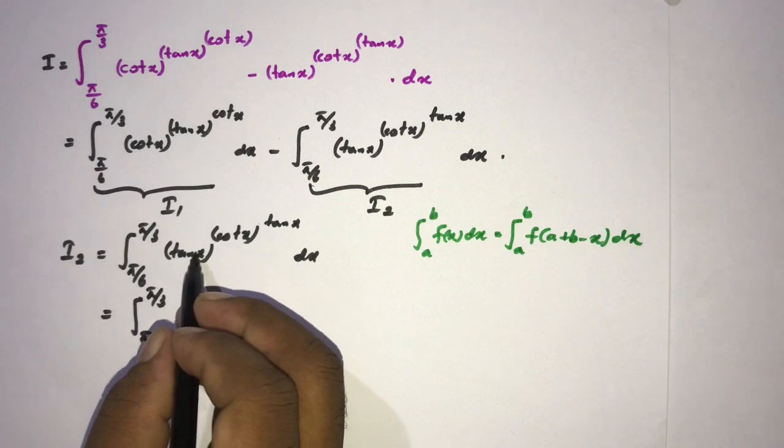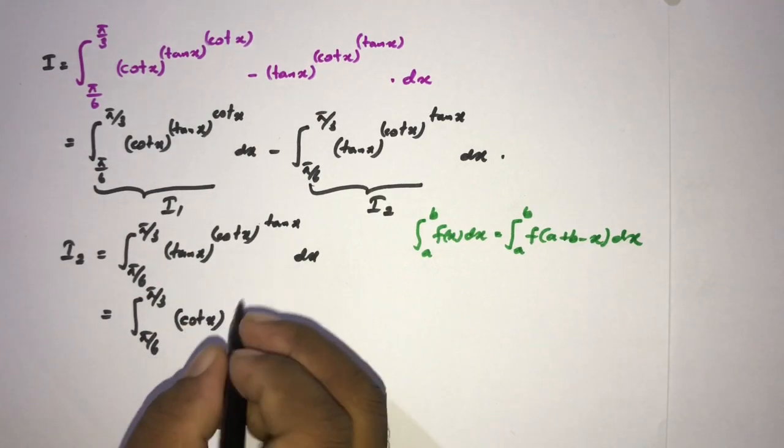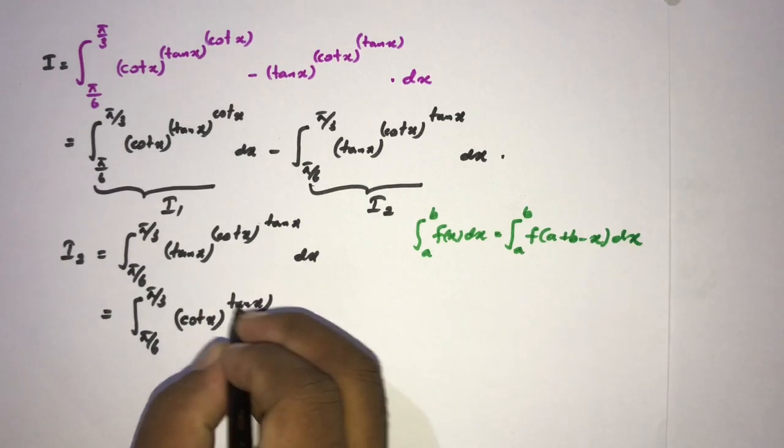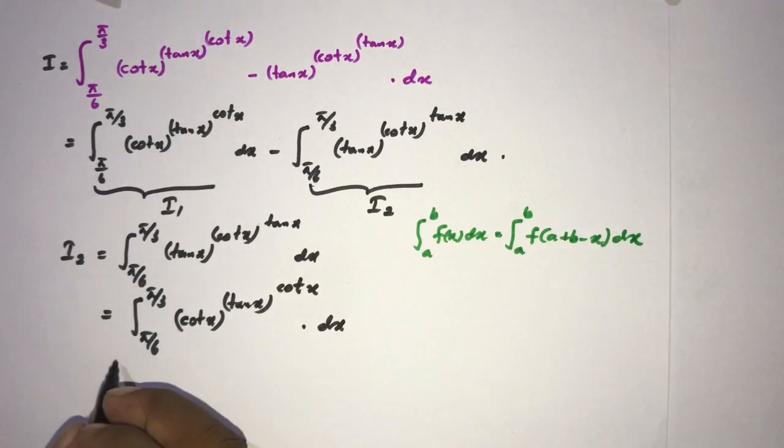So tan of pi over 2 minus x, we know cotangent of x, then here cotangent of pi over 2 minus x, we know tan of x, here also cotangent of x dx. Now we know this is equal to I1.